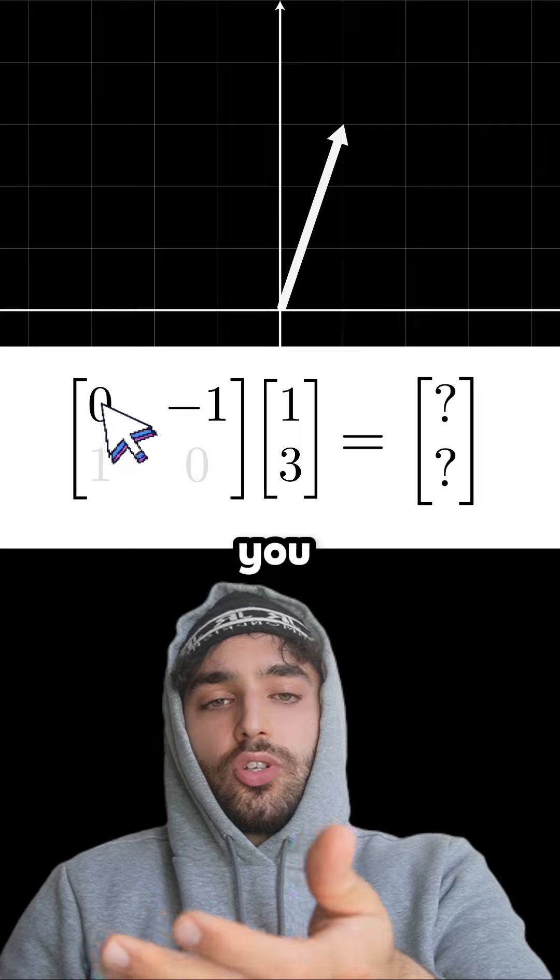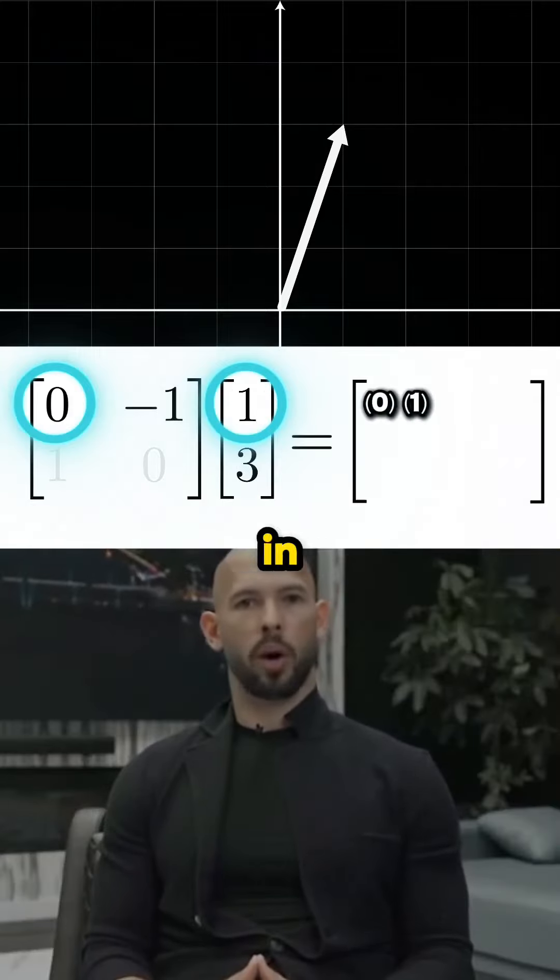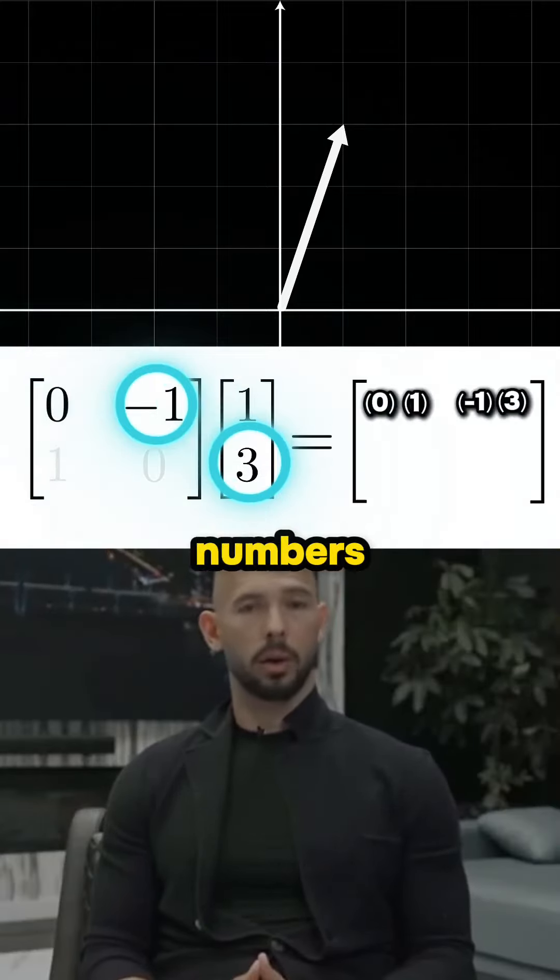Well, hold on a second. Yeah, how are you going to times a row by a column? You just times the first two numbers in the row and column, then times the second two numbers and add everything together.